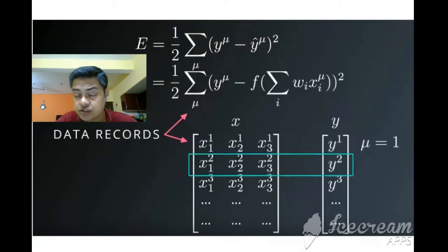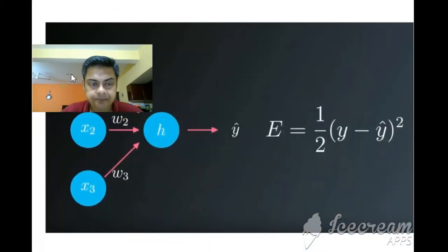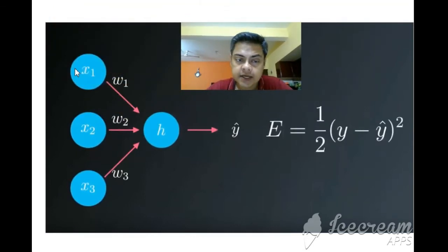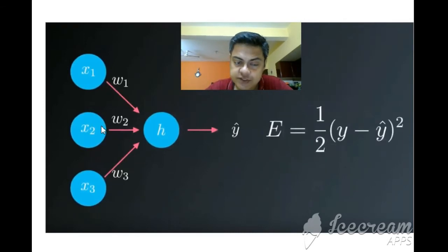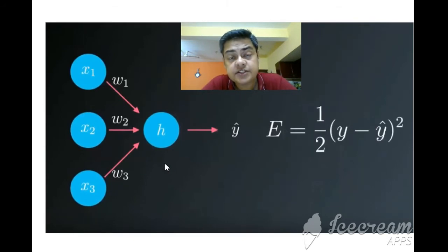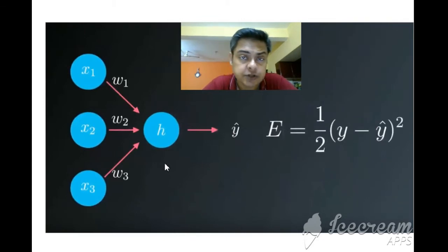Moving on: x1 has weight w1, x2 has weight w2, and x3 has weight w3. These weights are not predetermined — they are random in the beginning. Then, slowly, as gradient descent happens, the weights get shaped. We don't know the actual weight initially; sometimes weights start as random values like 0.2, 0.3, or 0.5.